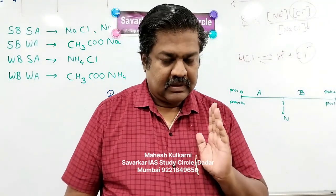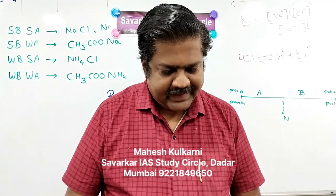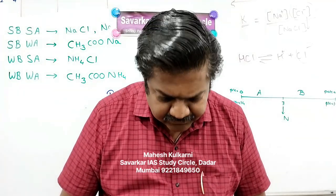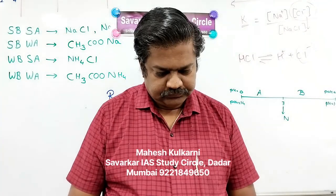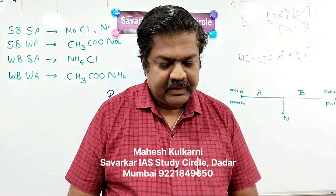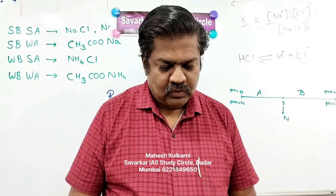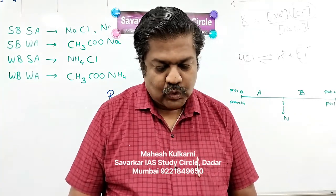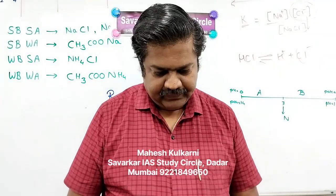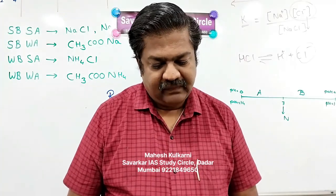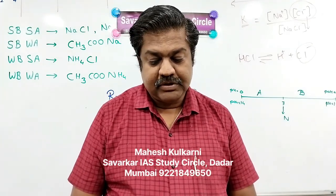First I am reading out the question and then we will discuss. How many statements are true? First: polytetrafluoroethylene, that is PTFE, is a fluoropolymer used in nonstick cookware. Second: polyurethane foam is used for insulation in refrigerators. Third: dichlorodiphenyltrichloroethane is used for making artificial fragrance and flavors.